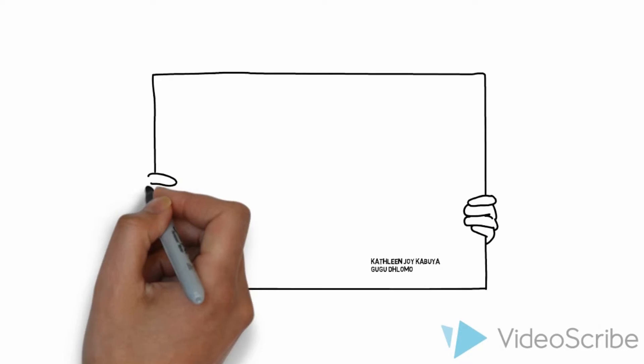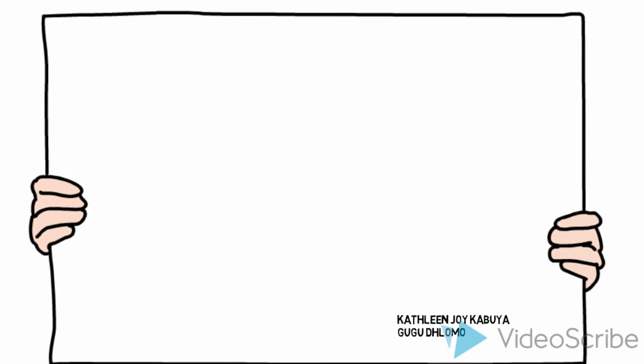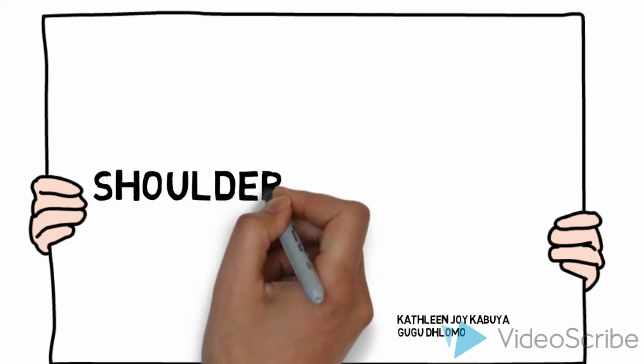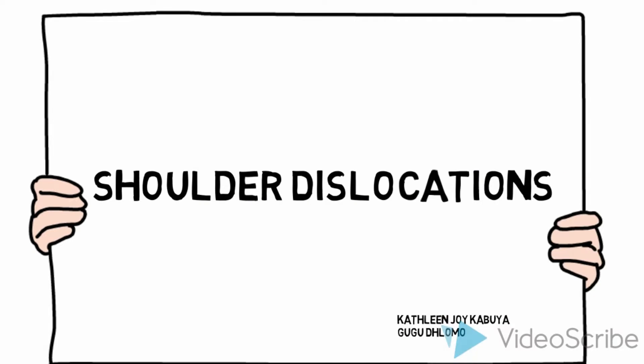Welcome. Today we will be discussing shoulder dislocations, starting with some basic anatomy, discussions about different types of dislocations, as well as information about how to assess the shoulder both clinically and radiologically. We will also discuss ways in which we can reduce the shoulder.